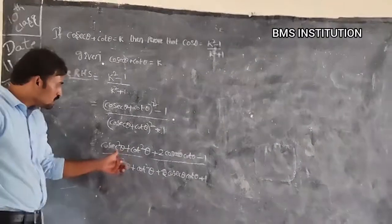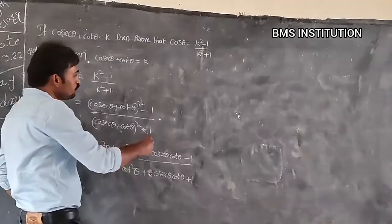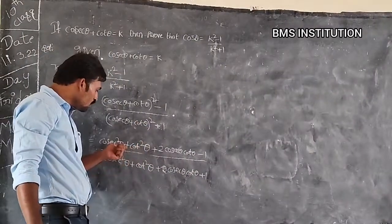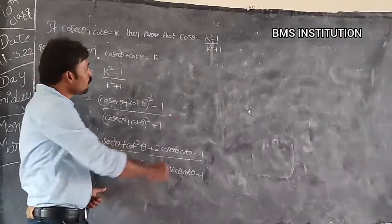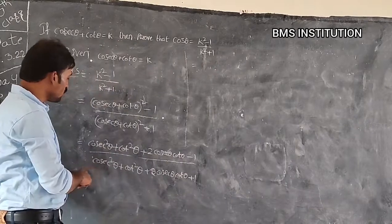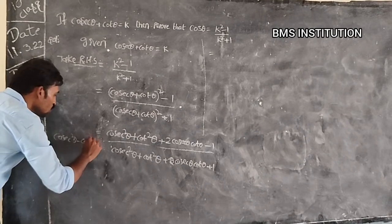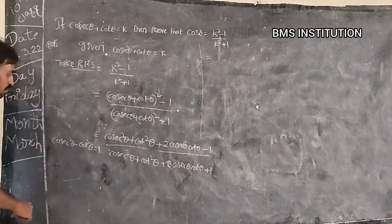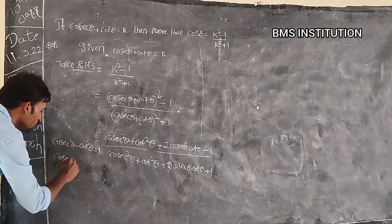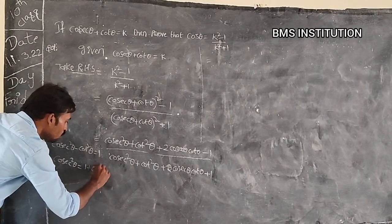Next, we apply the identity cosec²θ − cot²θ = 1. From this, cosec²θ = 1 + cot²θ. We will substitute 1 + cot²θ in place of cosec²θ.